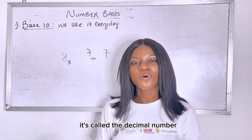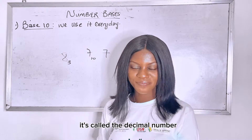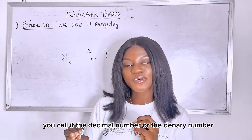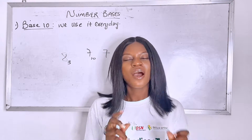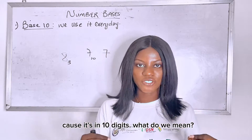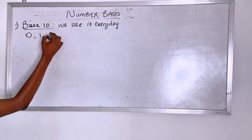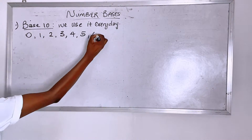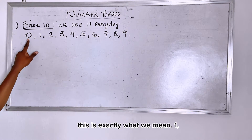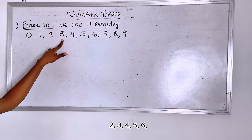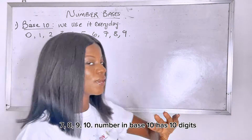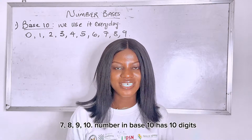And what's this number called? It's called the decimal number — you can also call it the denary number. And why is this number called a base 10 number? Because it has 10 digits. So when we say a number in base 10, this is exactly what we mean: 0, 1, 2, 3, 4, 5, 6, 7, 8, 9, 10. A number in base 10 has 10 digits.